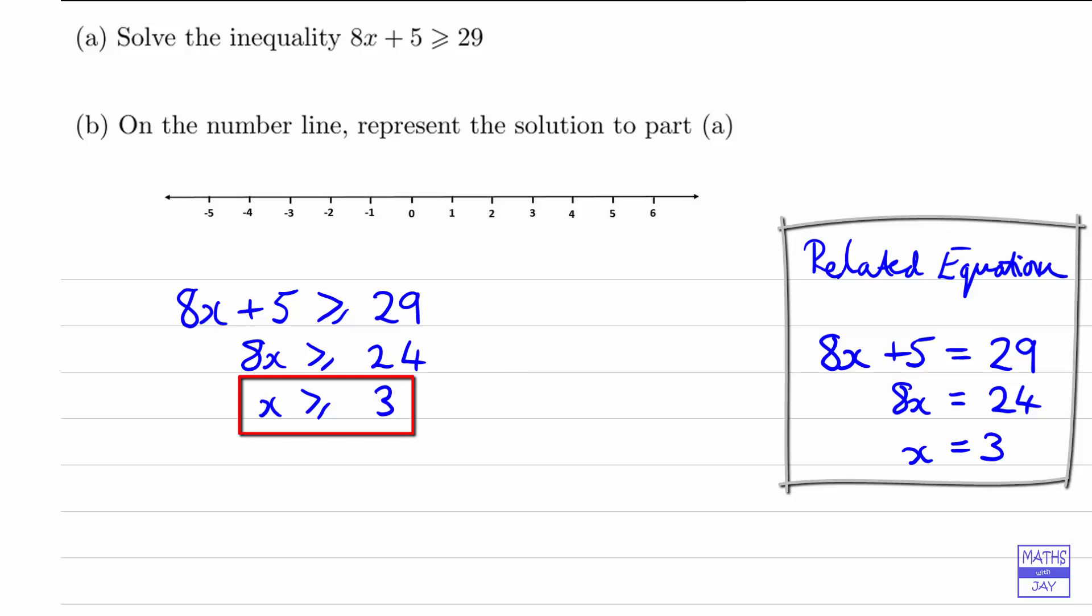But when it comes to checking it, there are two checks to do. You would check for 3, so 8 times 3 plus 5 equals 29, so let's just write that down.